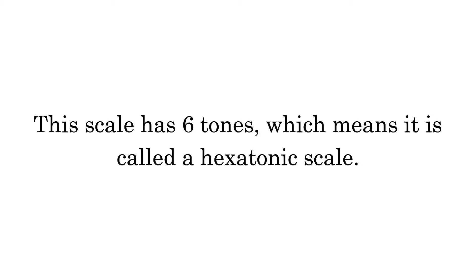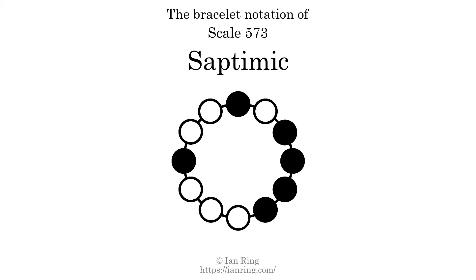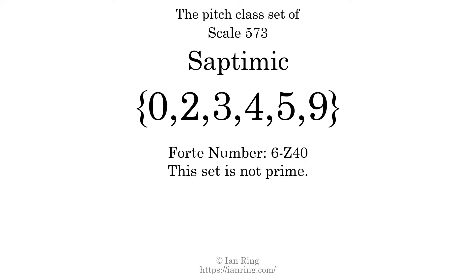This scale has 6 tones, which means it is called a hexatonic scale. This is a bracelet notation diagram of scale 573. The shaded circles represent tones that appear in the scale, and they are read clockwise, starting at the top. The pitch class set for this scale is 0, 2, 3, 4, 5, 9.